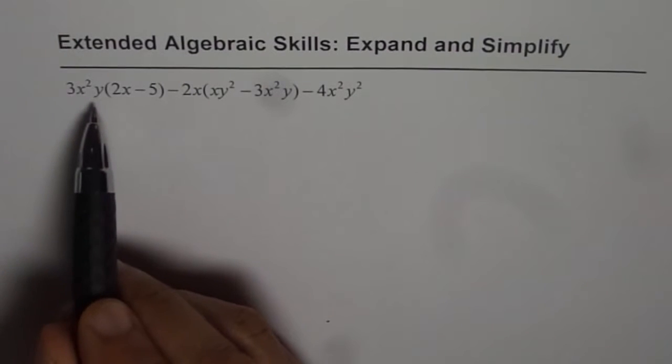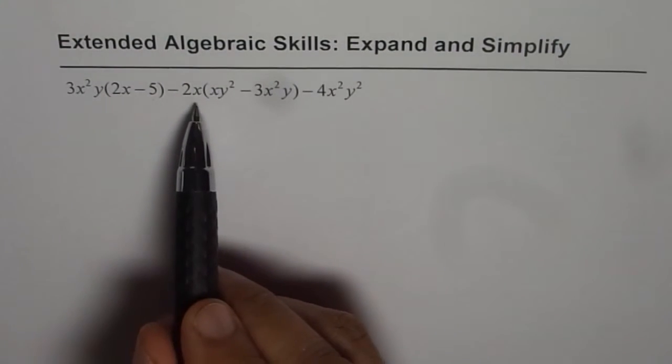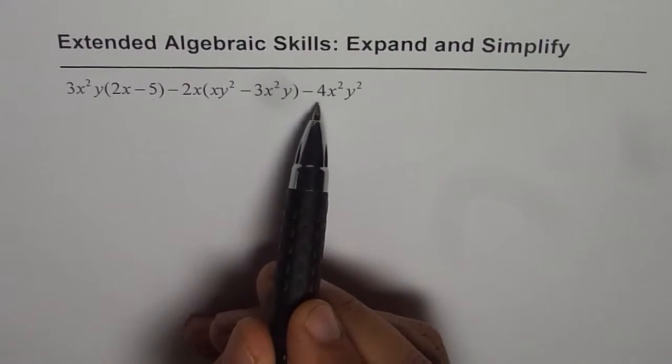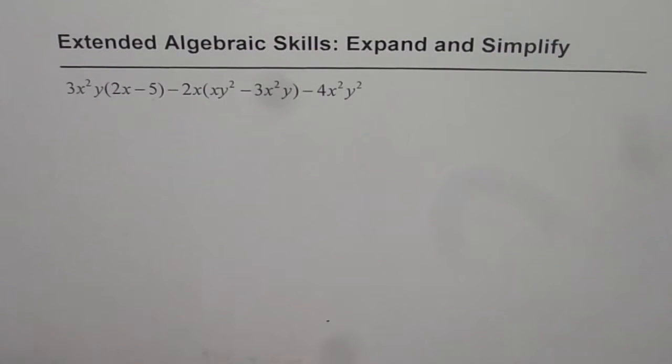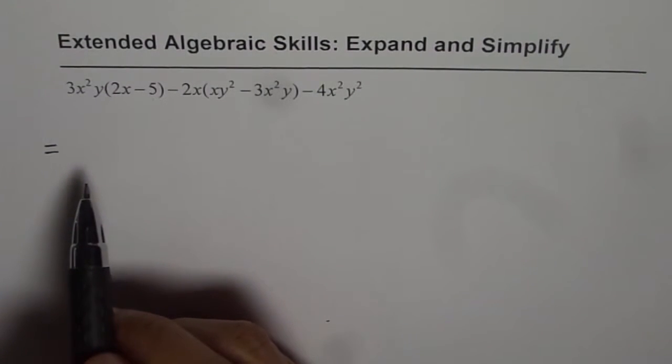So we have 3x²y times (2x - 5) minus 2x times (xy² - 3x²y) - 4x²y². So let's expand by applying distributive property.